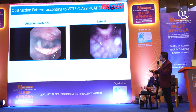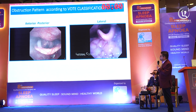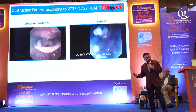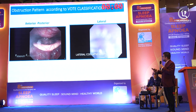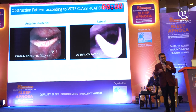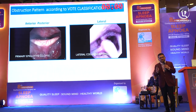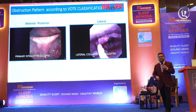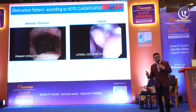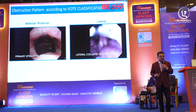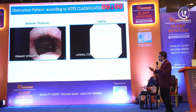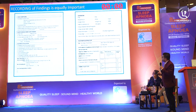Afterwards, when there is a problem at the epiglottis — whether it is a primary epiglottis collapse or a secondary epiglottis collapse — we have to understand the difference. If it is a primary epiglottis collapse, we have to do something to the epiglottis itself. But if it is a secondary epiglottis collapse, we can do something at the tongue base above it to treat the epiglottis issue.